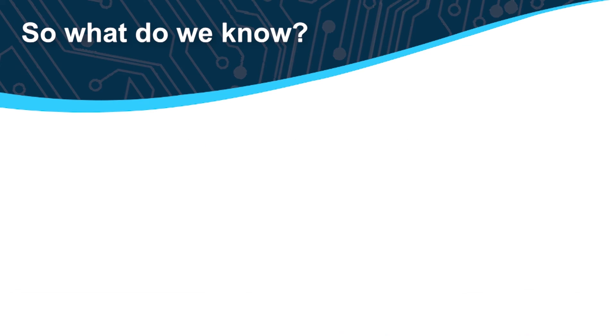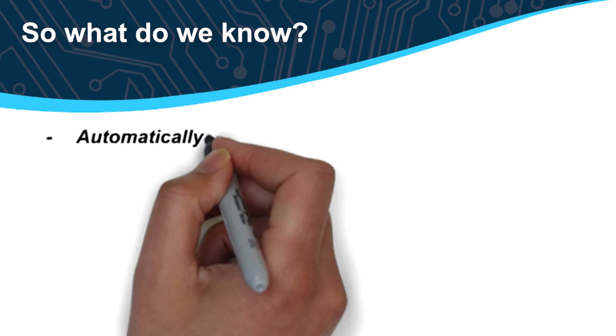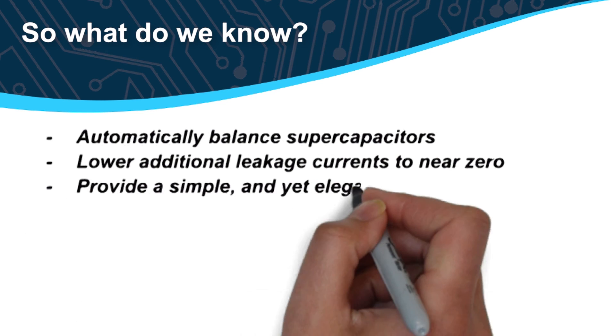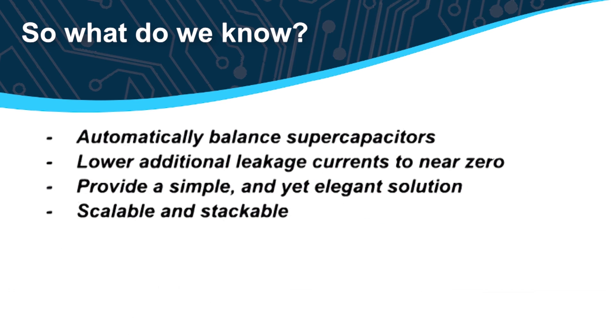So what do we know? SAB MOSFETs automatically balance supercapacitors. They lower additional leakage currents to near zero levels. They provide a simple and yet elegant solution that is scalable and stackable to any number of supercapacitors.